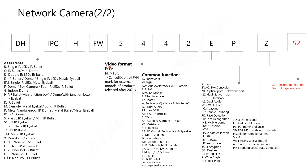The final section in the model number defines the generation series of the product — for example, Series 2, 3, 4, 5, and so on. Each section of the model number is meaningful and helps identify the exact specifications of that particular camera product.